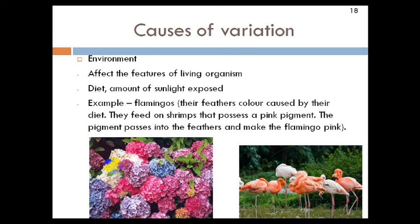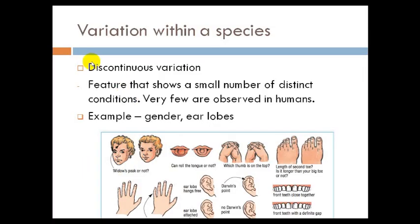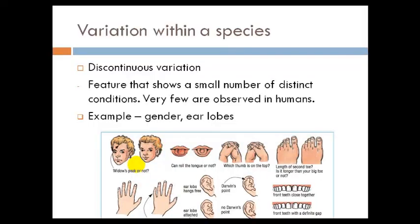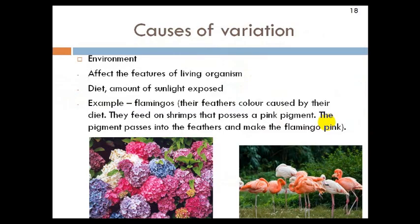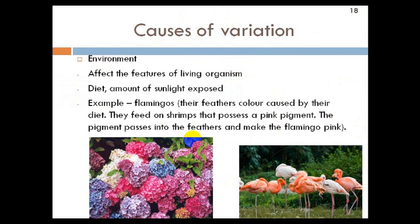For part 5, I want everybody to copy notes on: continuous variation, discontinuous variation with two examples only, and the causes of variation — the environment section. You have to copy those three parts. That's it for part 5. I'll see everyone again for part 6. Please make sure that everybody copies the notes. Bye, thank you.